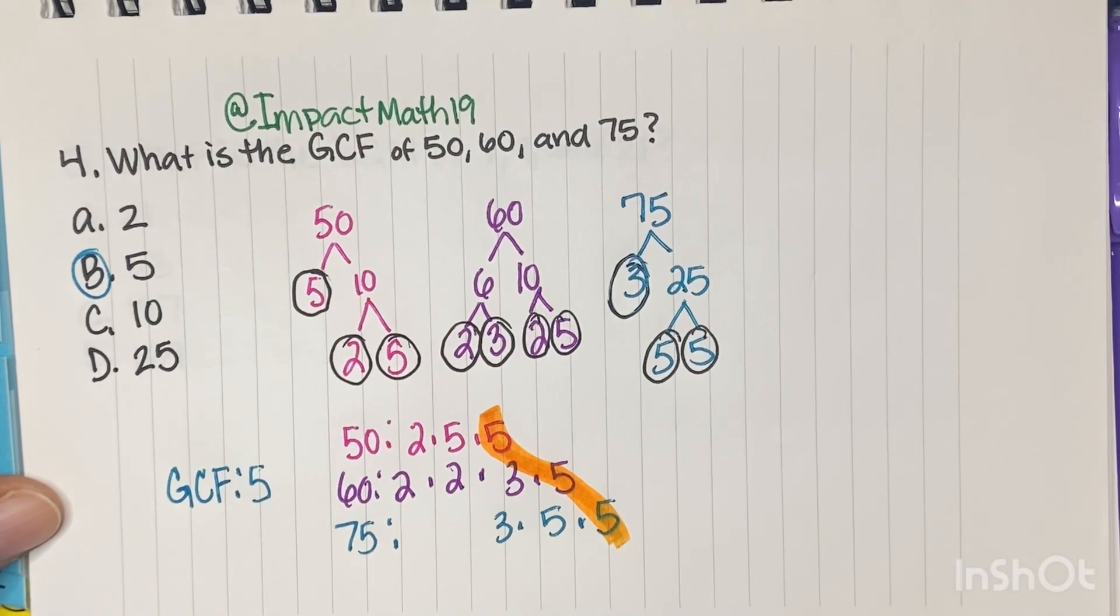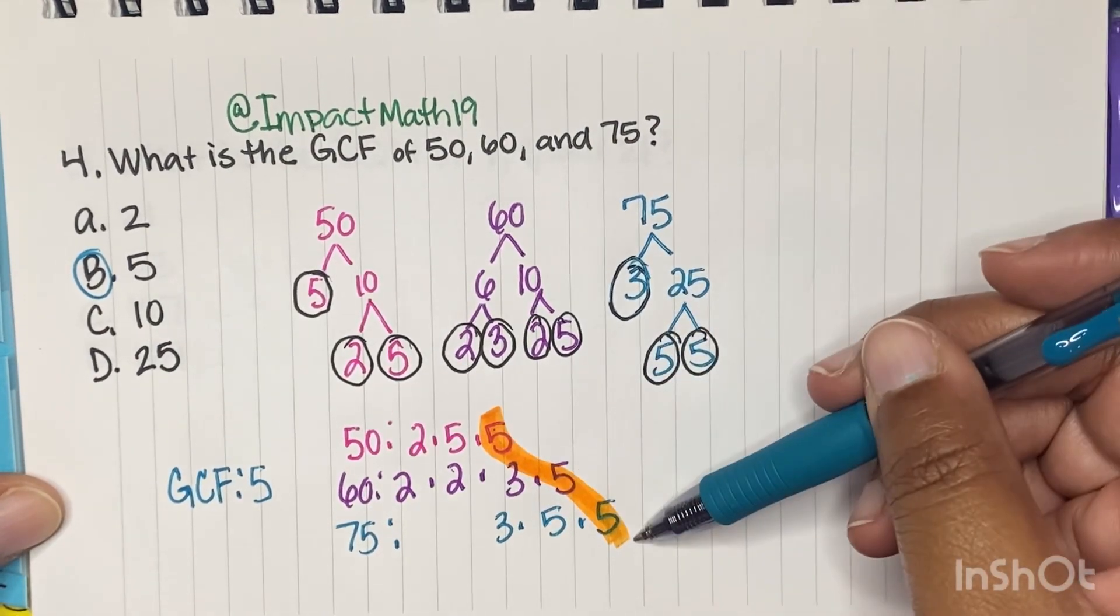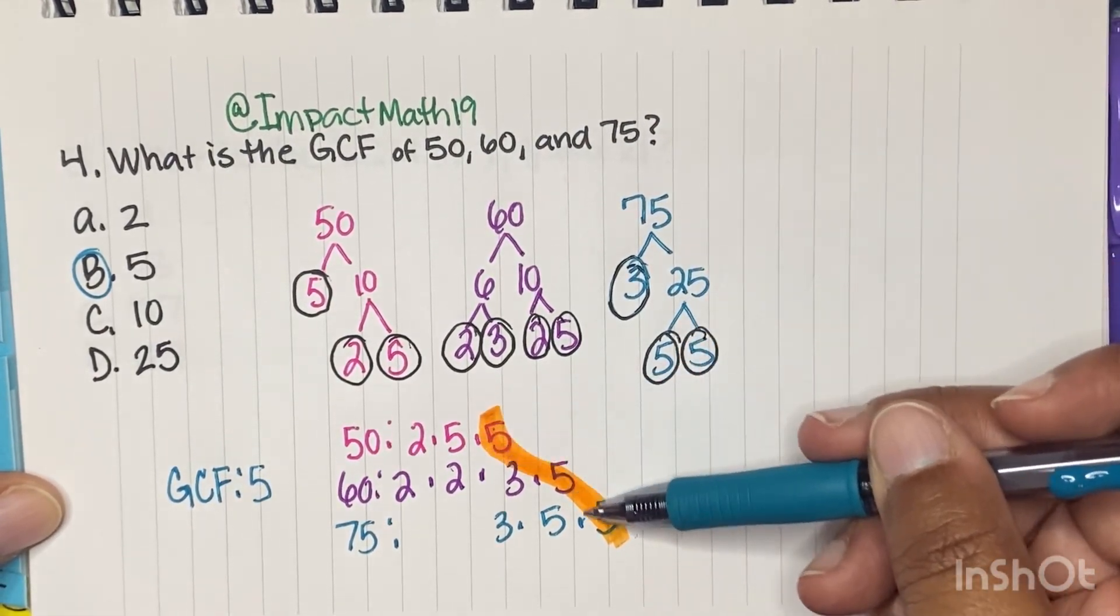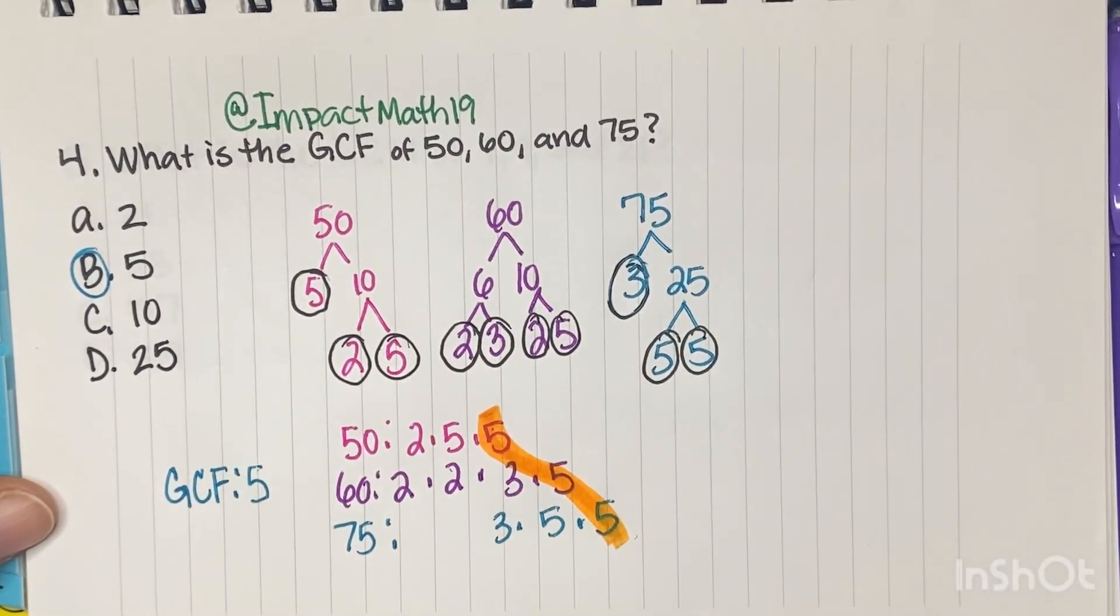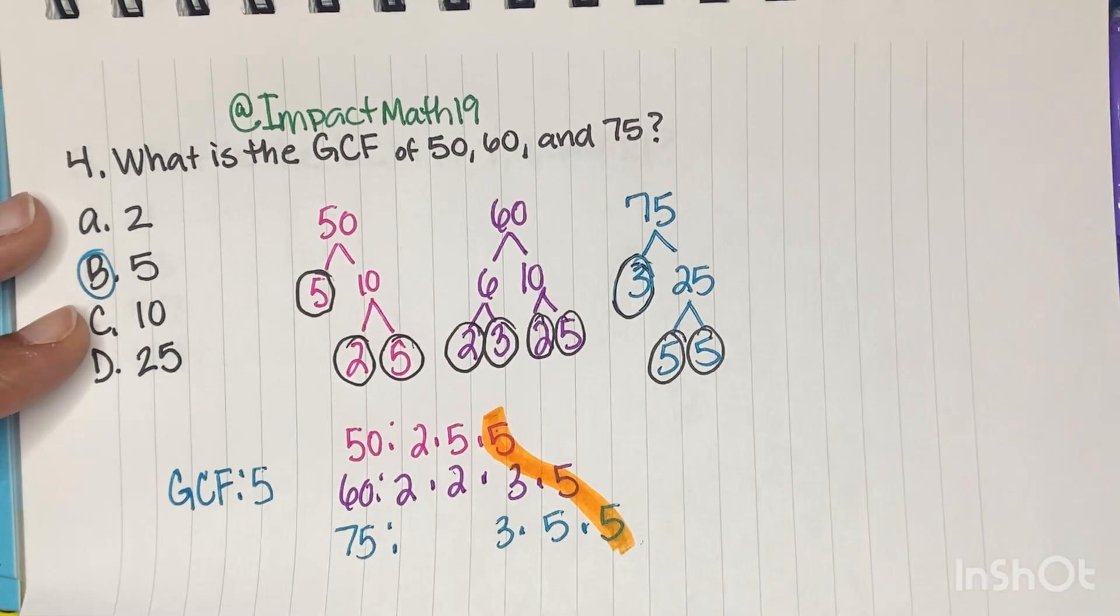And the only thing that I can see that all three numbers have in common is this one trio of fives. So our greatest common factor, our GCF, is going to be just five. So B is our answer. Remember, you're not multiplying these out. You're just seeing what they have in common. And they have one pair of five in common.